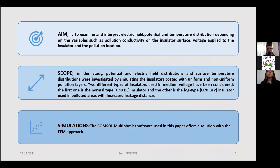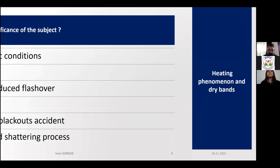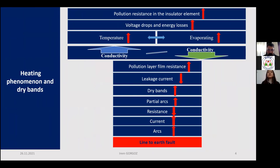High voltage insulators encounter formations that interrupt their duties, such as pollution. Pollution flashover formed on insulator surface may cause large-scale blackouts and accidents of the grid system. The flashover may cause overheating on the insulator, resulting in cracking and shattering. With a slight increase in the resistance of the polluted insulator elements, the voltage drops and the energy loss on this element increases. This released energy affects the conductivity of the pollution layer in two directions: it increases the temperature of the pollution layer, allowing more soluble soils to dissolve and increasing the overall film conductivity; the stray energy acts in a conductivity-reducing direction by evaporating the moisture of the conductive film.